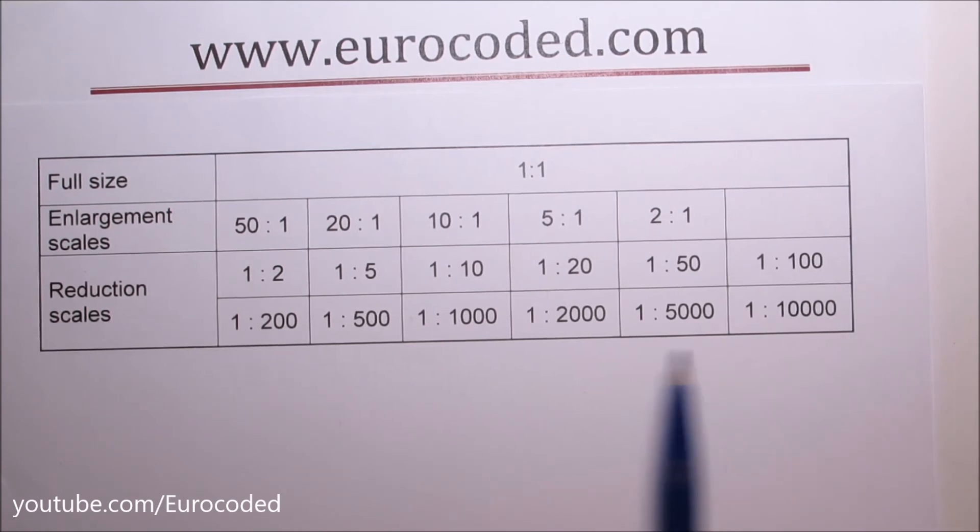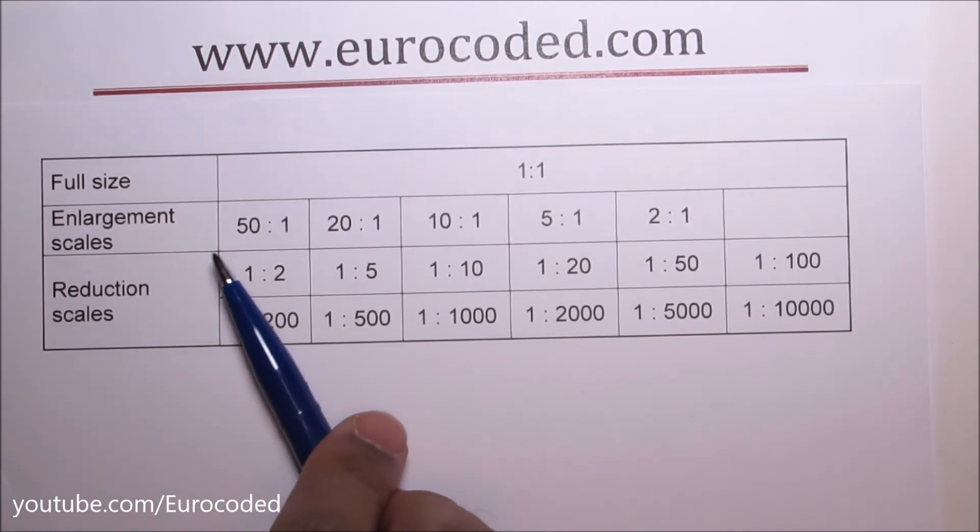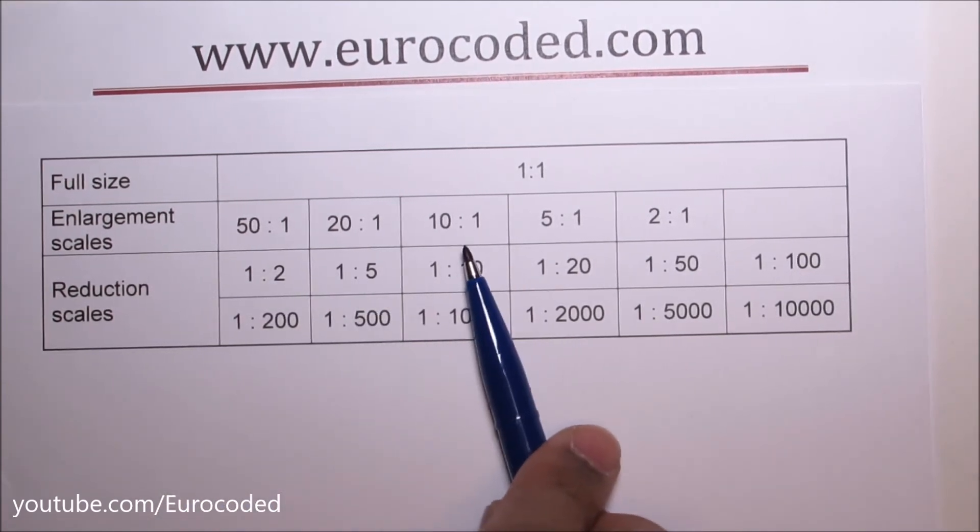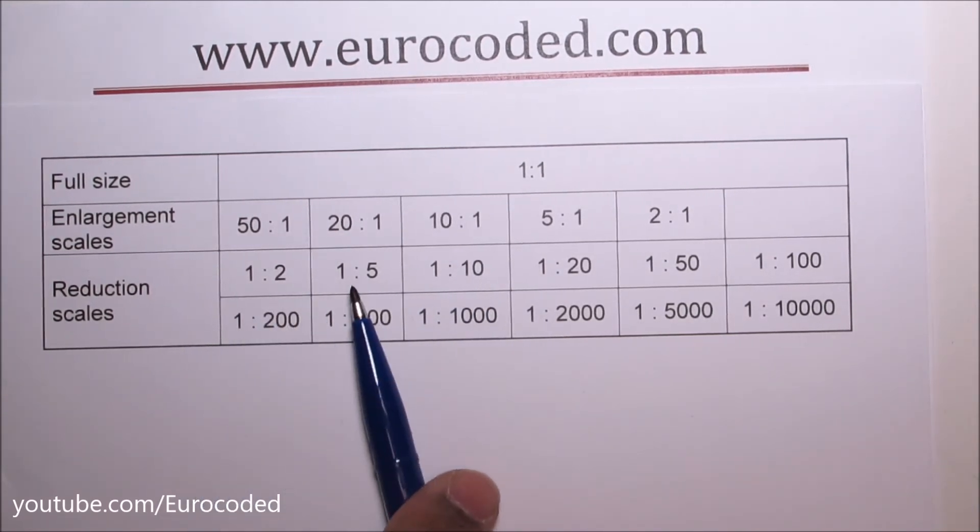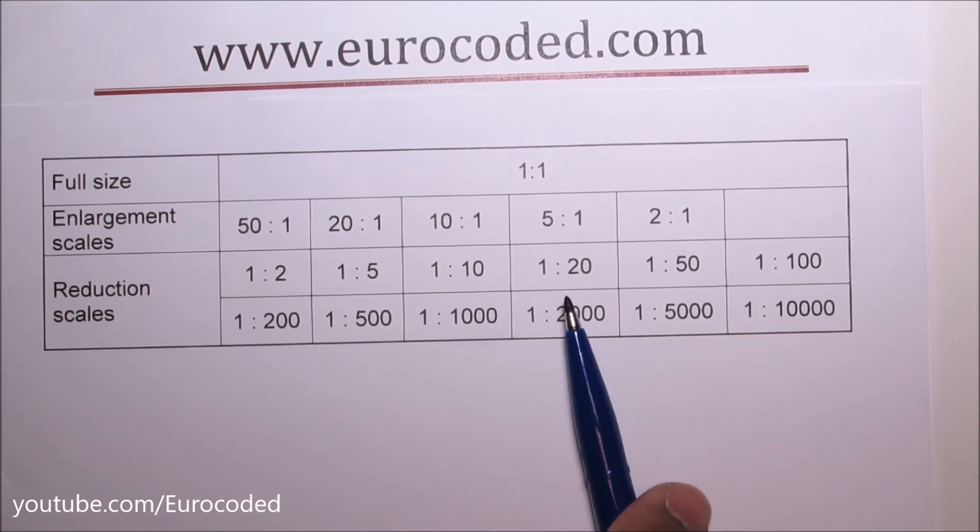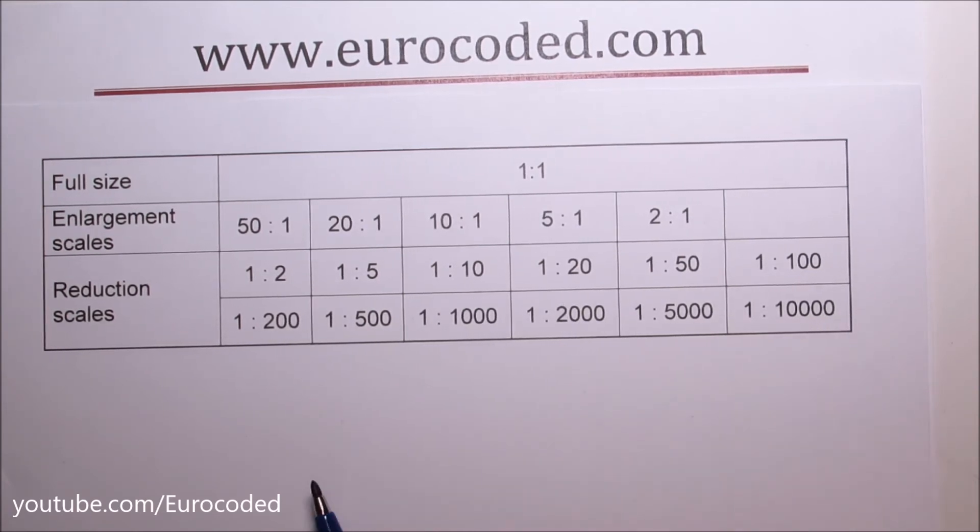These are a set of recommended scales. You can see they are 50 to one, 20 to one, 10 to one, etc. for enlargement scales, and 1 to 2, 1 to 5, 1 to 10, 1 to 20, etc. for reduction scales.